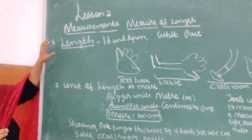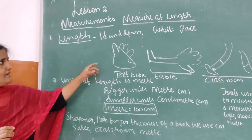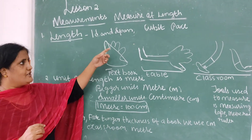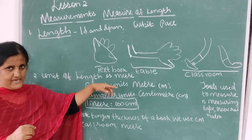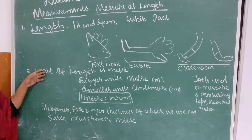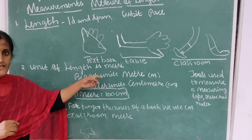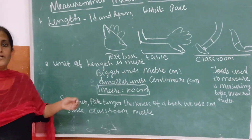So what must we know? Length is also measured by hand span, cubit, and space. Nowadays the unit of length is meter. The bigger unit is measured by meter and the smaller unit is measured by centimeter.